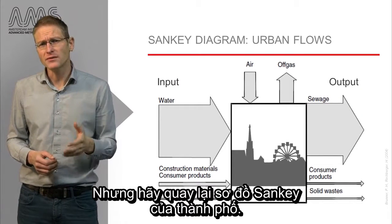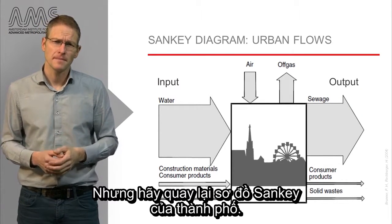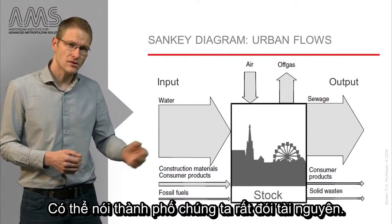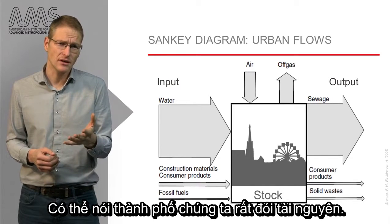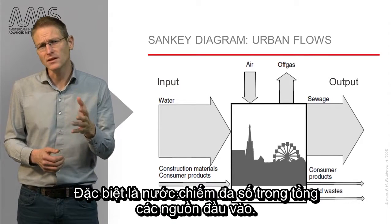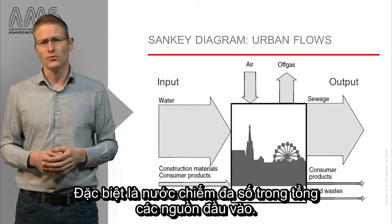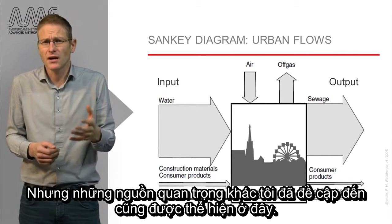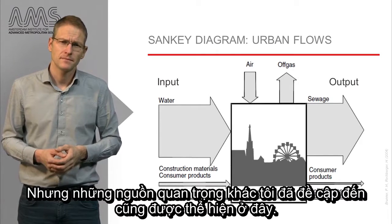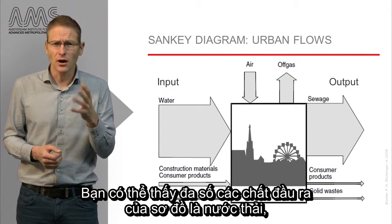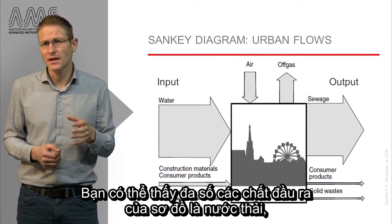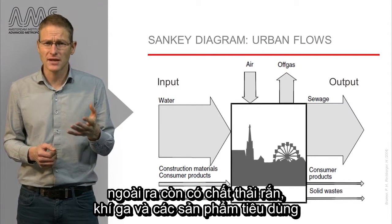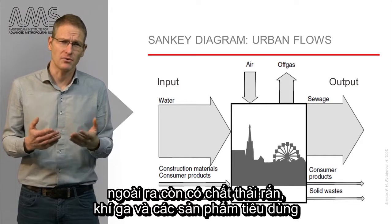But let us go back to the Sankey diagram of a city. As you can see from the diagram shown here, our city is very resource hungry. Especially water dominates the overall resource inputs, but the other important resources I mentioned earlier are also shown here. You can also see that the output side of the diagram is dominated by wastewater, but also that solid wastes, off-gases and consumer products are represented there.